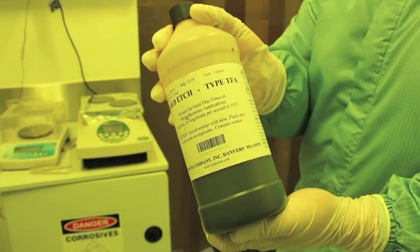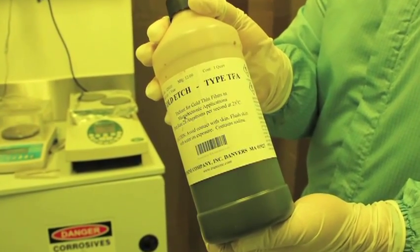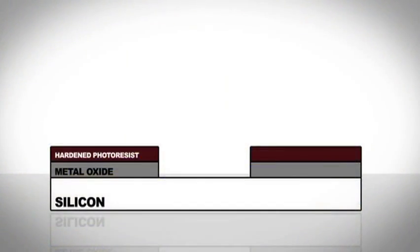Here we are using a gold etch for the gold layer on the wafer. The exposed photoresist protects the metal on the silicon wafer from being removed when etching.